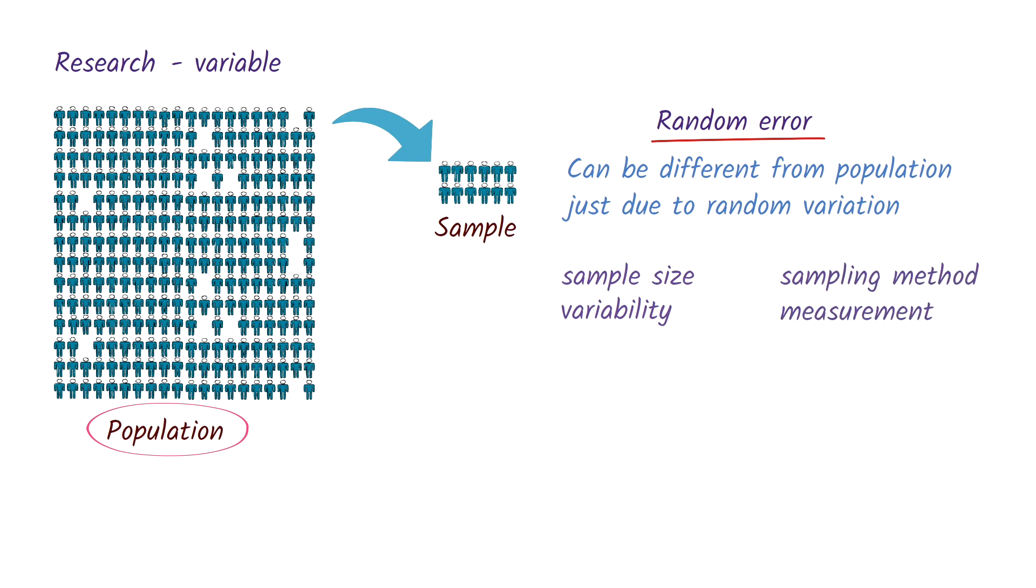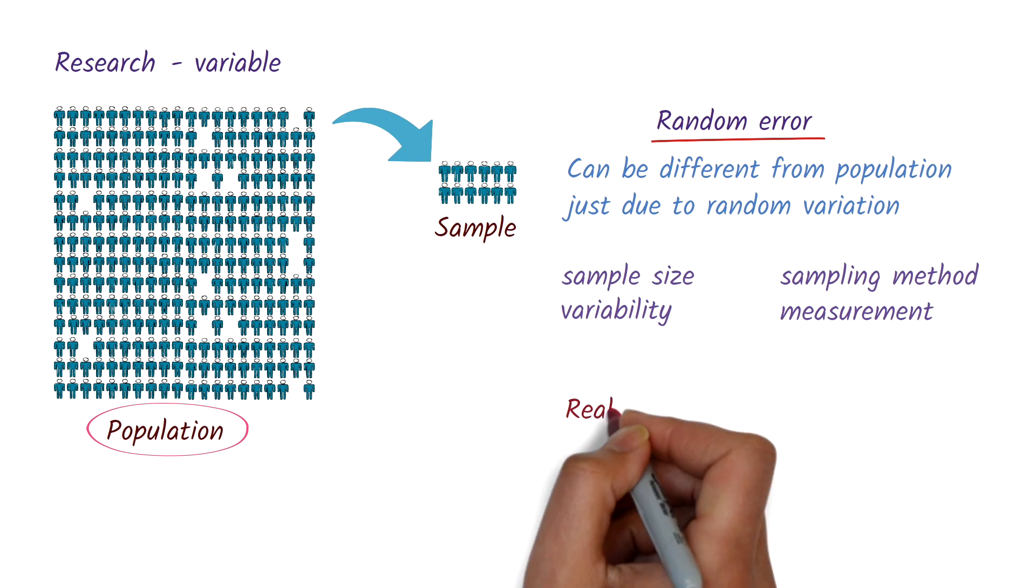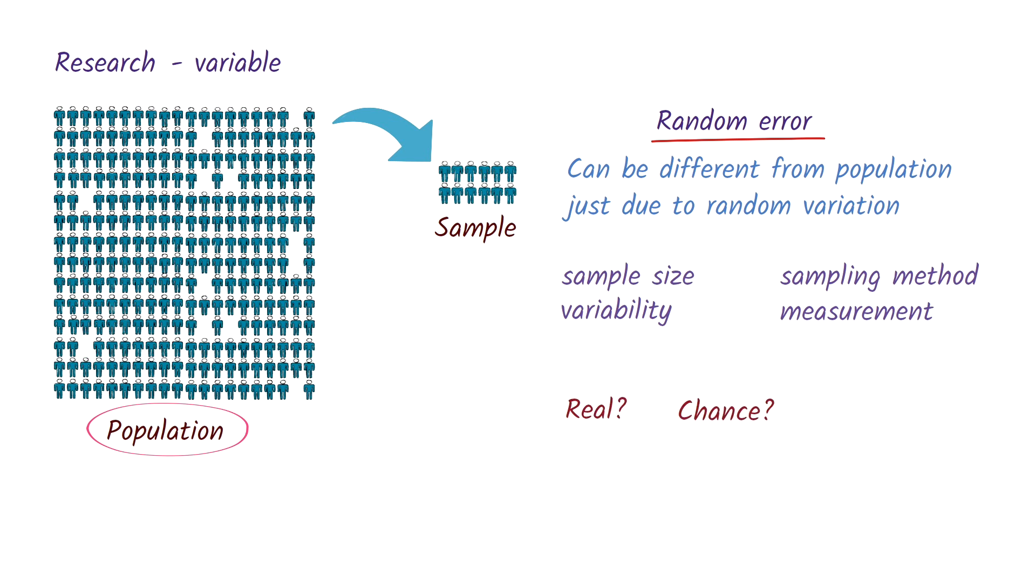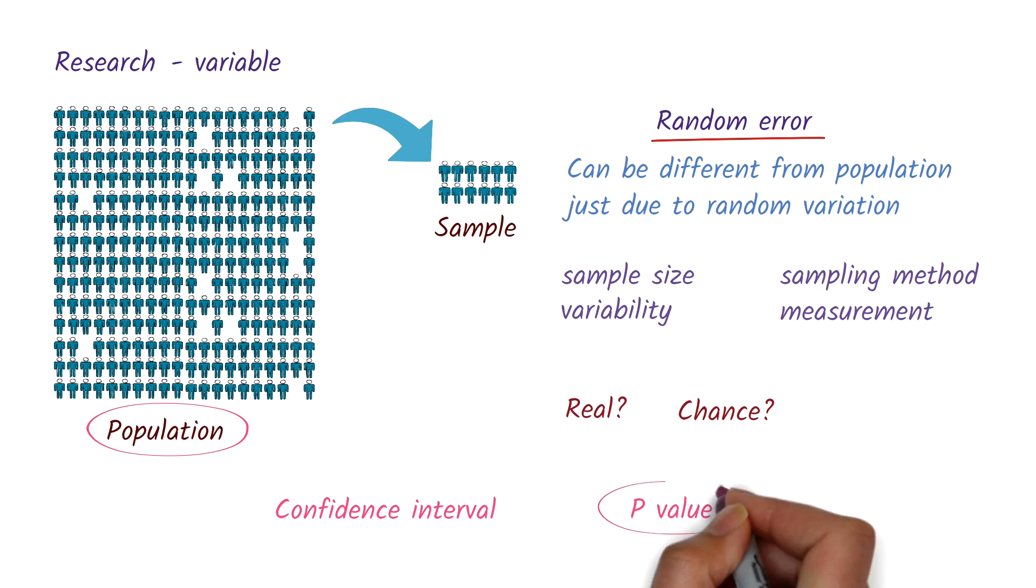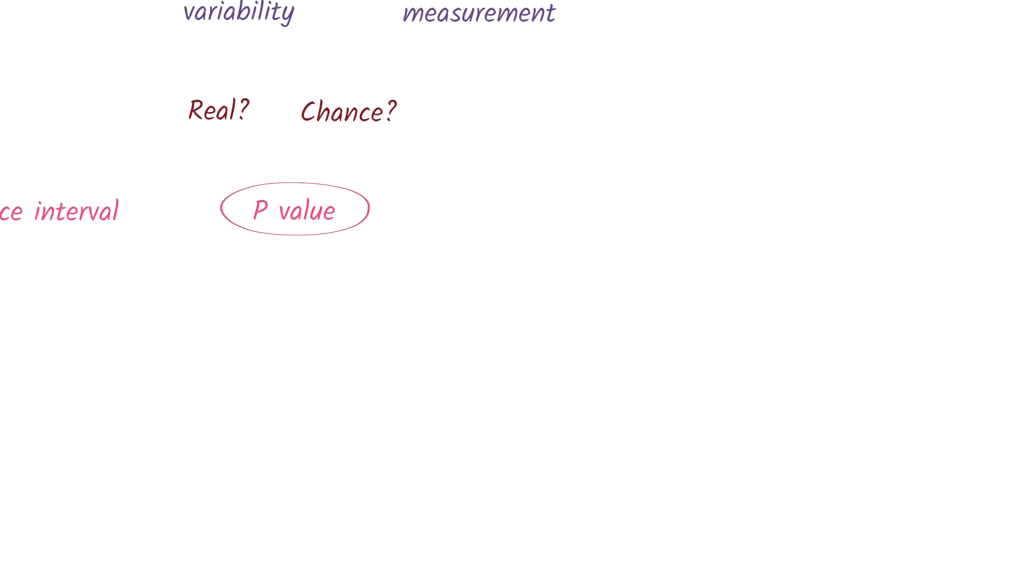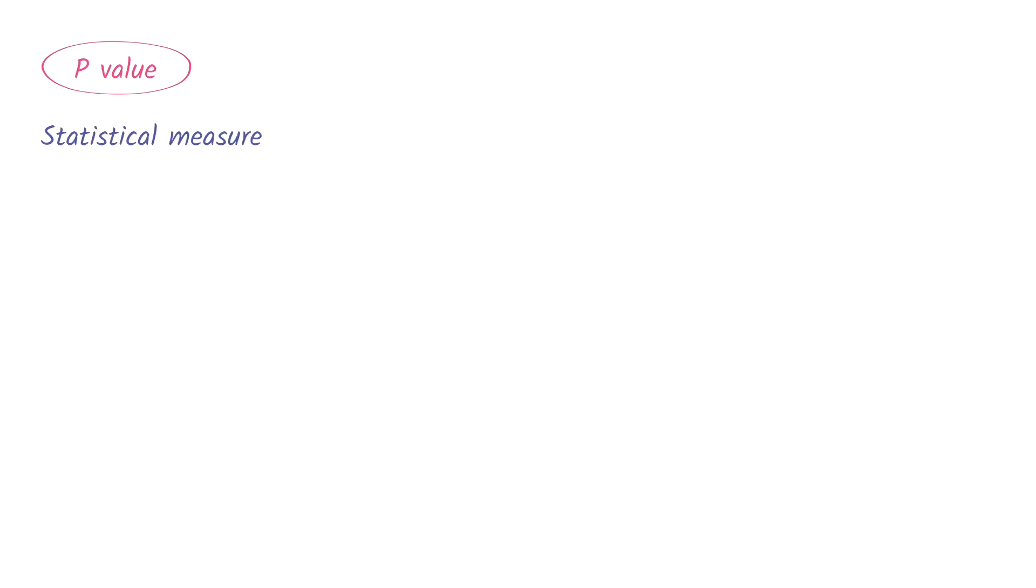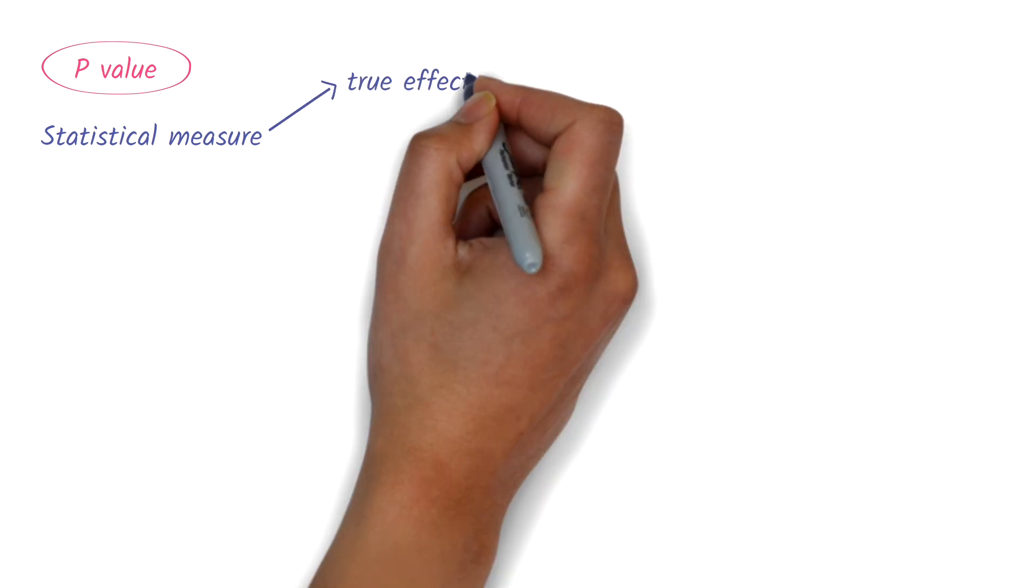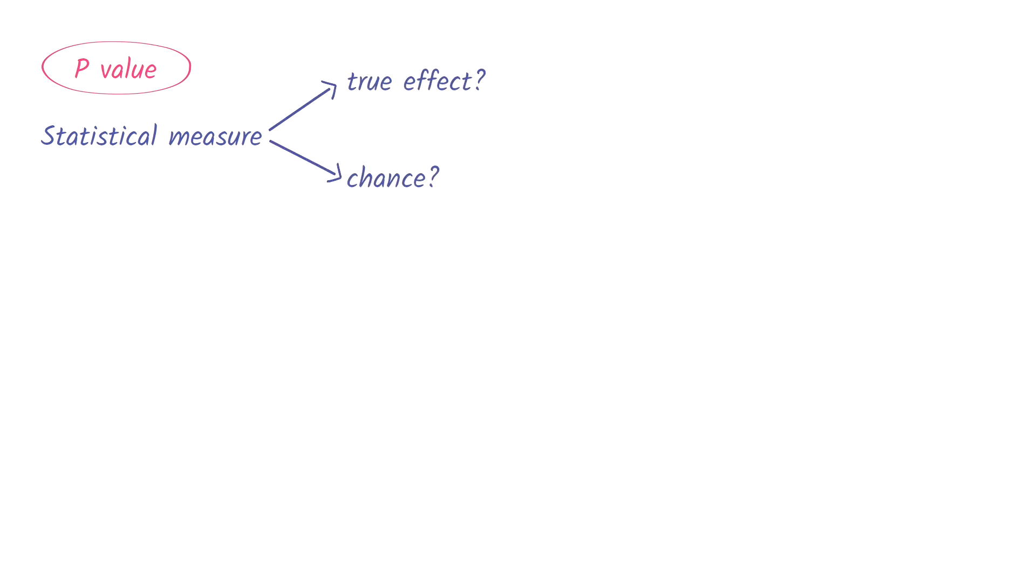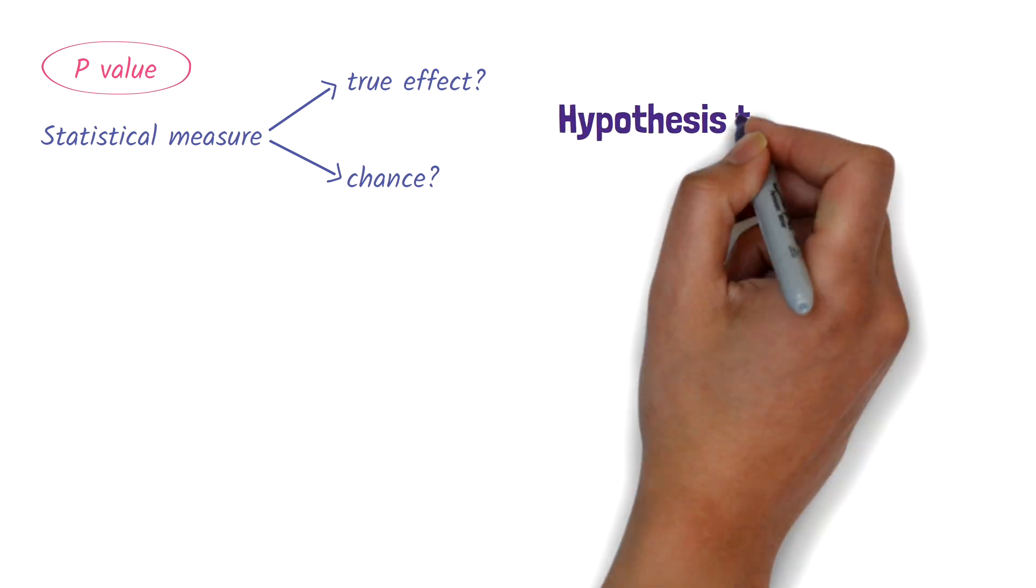So how do we know that the result of a study is real and not just due to chance? To answer this, researchers use statistical tools such as confidence intervals and p-values. In this video, we'll take a look at the p-value and uncover what it really tells us. A p-value is a statistical measure we can use to help us determine whether the result of a study is a true effect or due to chance. It's calculated as part of a process called hypothesis testing.